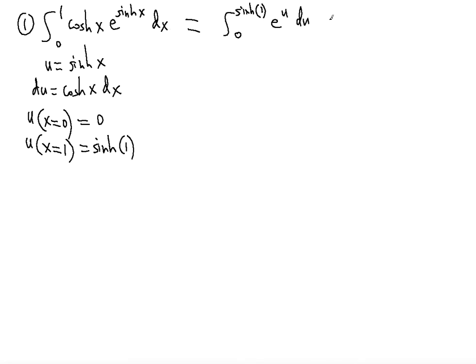Then we will have e to the u integrated from 0, the definite integral evaluation using the fundamental theorem of calculus, sinh 1. That will give us e to the sinh 1 minus e to the 0, which is just 1. That's your definite integral value.